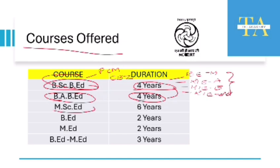Coming to the MSc Ed program — Masters of Science and Education — here you will be learning BSc, MSc, and BEd for a duration of six years. This program is only offered in RIE Mysore, and you have to apply through all-India quota for MSc Ed, whereas for BSc BEd and BA BEd there are state-wise seats for specific RIEs.